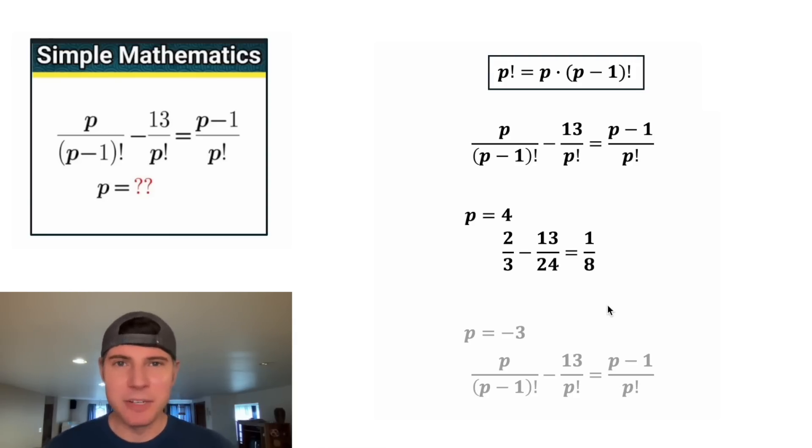Now we have 2 thirds minus 13 24ths equals 1 8th. Let's give everything a common denominator, and the lowest common denominator is going to be 24. So we need to multiply this 2 thirds by 8 over 8, and we need to multiply this 1 eighth by 3 over 3. So we can mush these together. For this one, 8 times 2 is equal to 16, and 8 times 3 is equal to 24. And then for this one, 1 times 3 is equal to 3, and 8 times 3 is equal to 24. Now that these two fractions have the same denominator, we can write them as a single fraction. And 16 minus 3 is equal to 3. And then we end up with two equivalent fractions, so we know p equals 4 checks out.